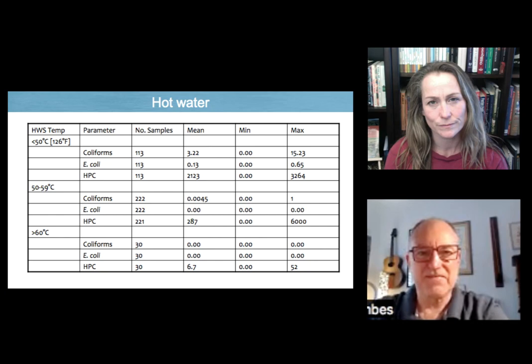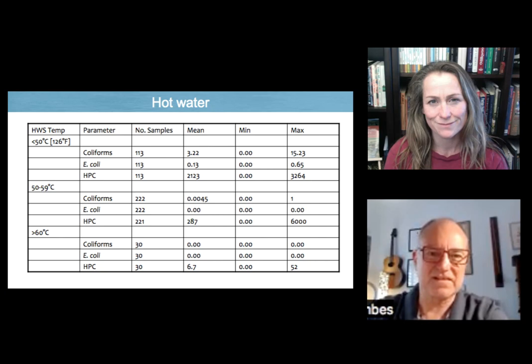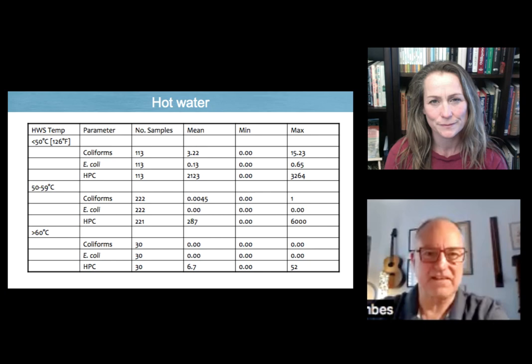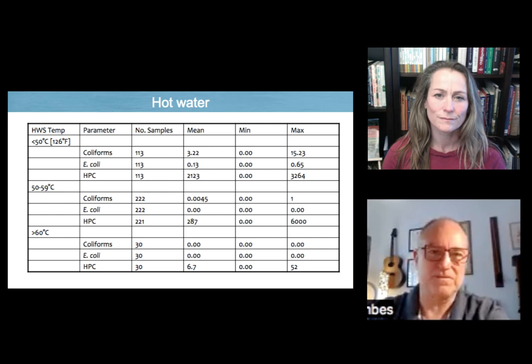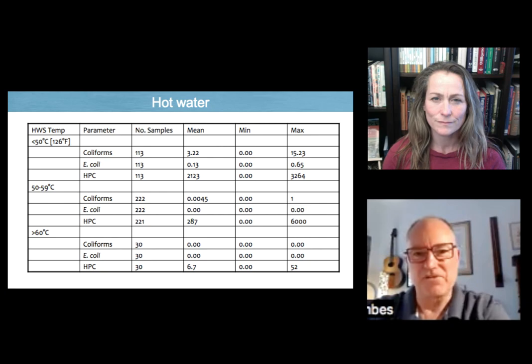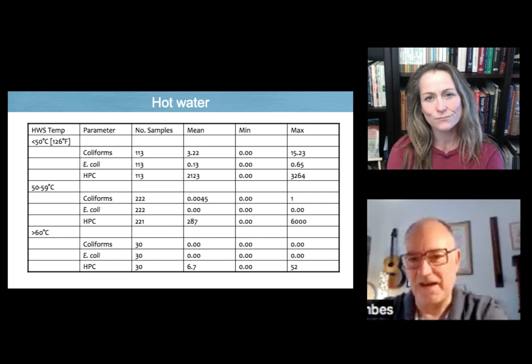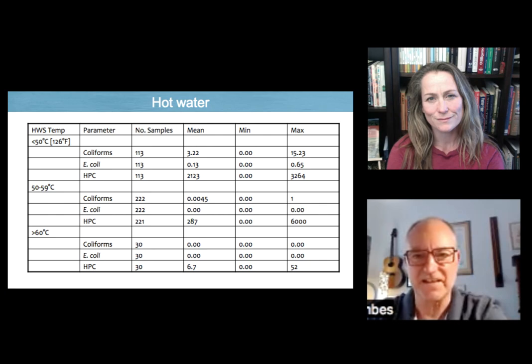What we actually found is that temperatures below 50 degrees Celsius, which is, I think, Michelle, you've kindly put 126 degrees Fahrenheit there, there was a very significant reduction in coliforms, E. coli, and heterotrophic plate counts, which is almost all bacteria. But there was some residual in the maximum column in the far left as you're looking at the screen. But the mean results, you can see very low counts.